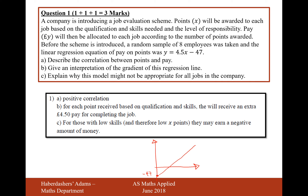For part B, give an interpretation of the gradient of this regression line. For each point received based on qualification and skills, the employee will receive an extra £4.50 pay for completing the job.